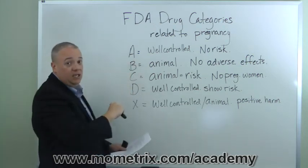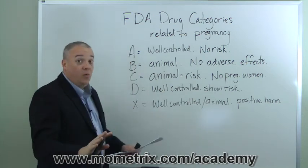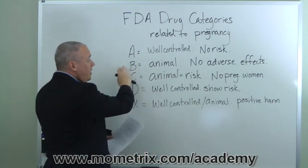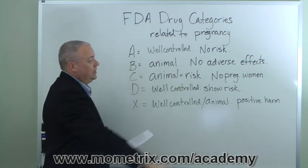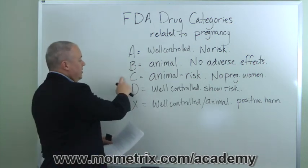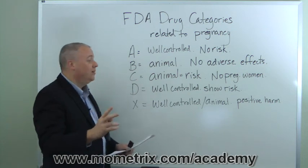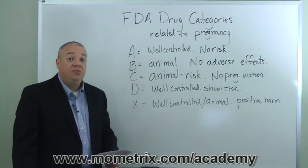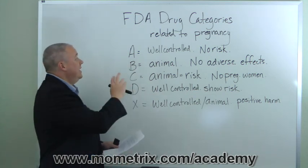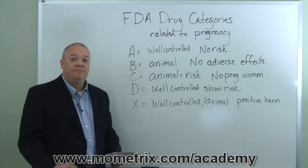A through D is basically a continuum: A being those at no risk whatsoever to the unborn baby; B, no adverse effects in humans but primarily animal studies; C, risk shown in animals but no pregnant women's studies, or no studies at all; D, well-controlled studies showing an elevated risk of harm; and X, well-controlled studies proving actual positive harm to the unborn baby. These are the classifications the FDA has put together for drug categories related to women and pregnancy.